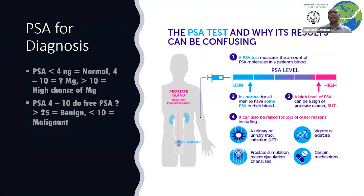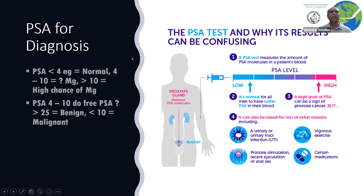We have prostate-specific antigen (PSA), which is quite helpful in diagnosing. The normal level is less than 4 nanograms, while 4 to 10 is the grey zone — because other factors like urinary tract infection, exercise, or prostate stimulation can increase the PSA level. Greater than 10, the likelihood of malignancy is much higher. If it is between 4 to 10, you can check the free PSA. If the free PSA is more than 25%, malignancy is quite unlikely; if it is less than 10%, the chances of malignancy are fairly high.